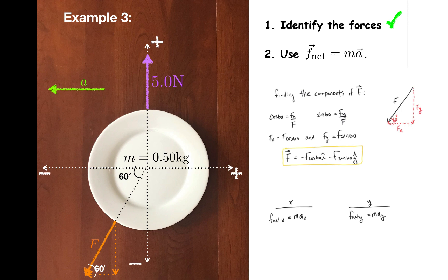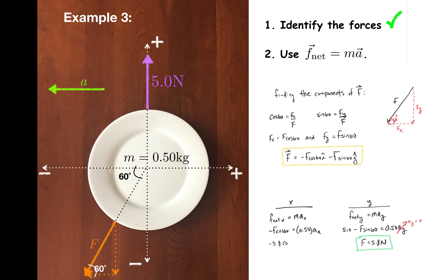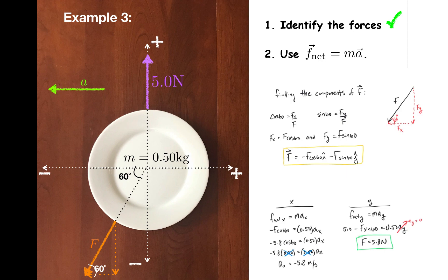Turning back to Newton's second law, in the x direction the only force is the x component of F, so negative F cosine 60 is equal to 0.50 ax. In the y direction, F net is 5.0 minus F sine 60, and that's equal to 0.50 ay. At first it seems like there are too many variables to solve these equations, but remember that the acceleration is entirely along the x-axis, so ay is equal to 0. Once that substitution is made, it's possible to solve for F, which is equal to 5.8 newtons. And once F is known, it may be substituted back into the x equation. So negative 5.8 cosine 60 is equal to 0.50 a sub x. Cosine 60 is 0.50, so a sub x turns out to be negative 5.8 meters per second squared.